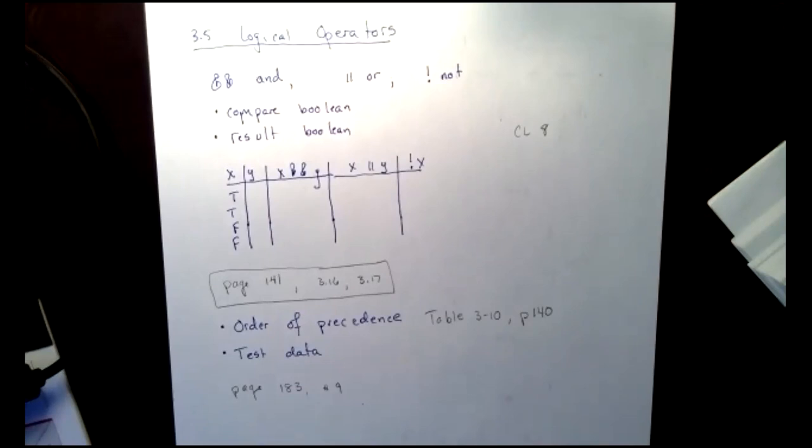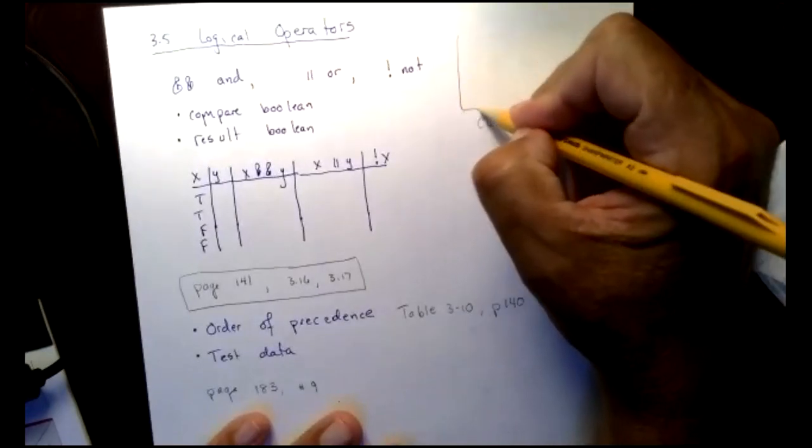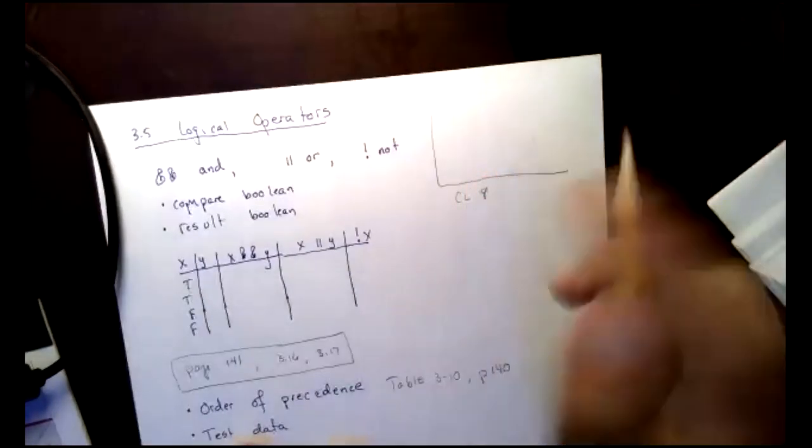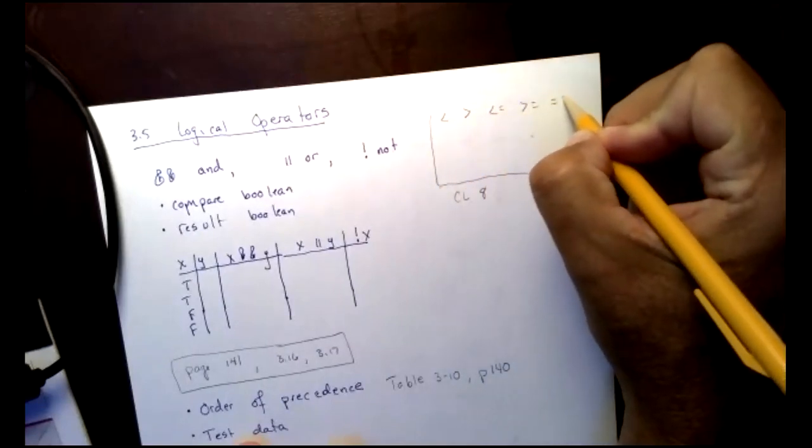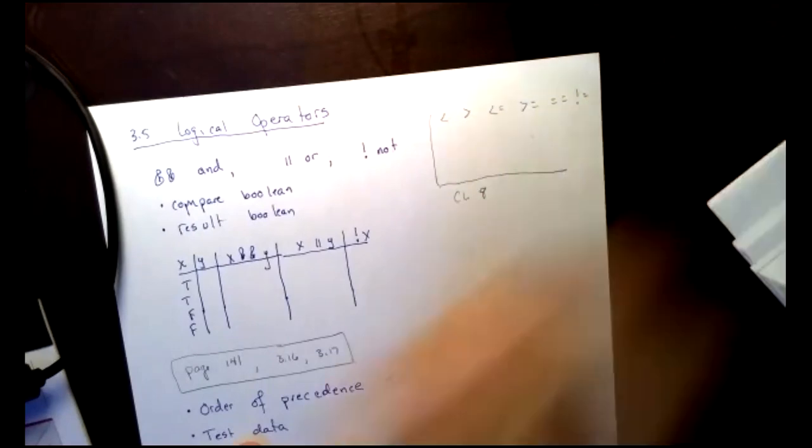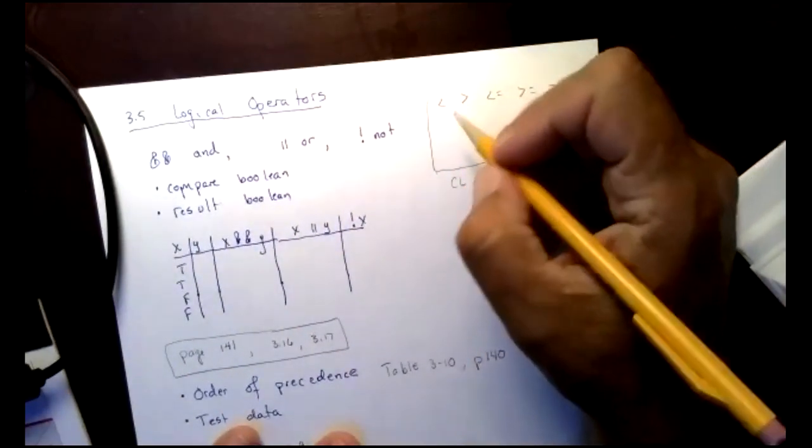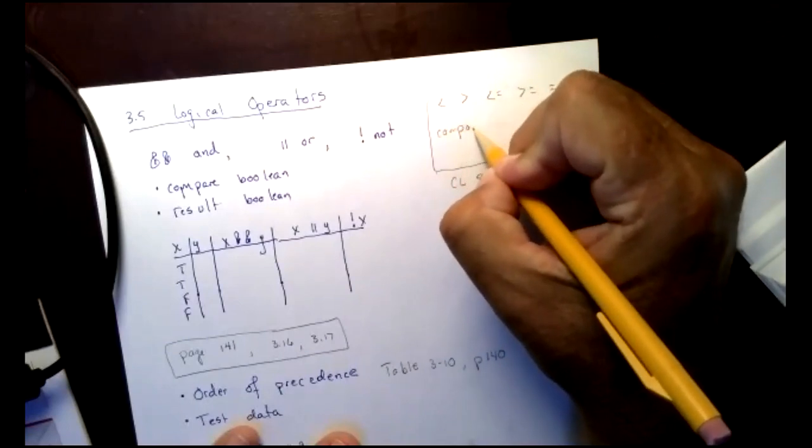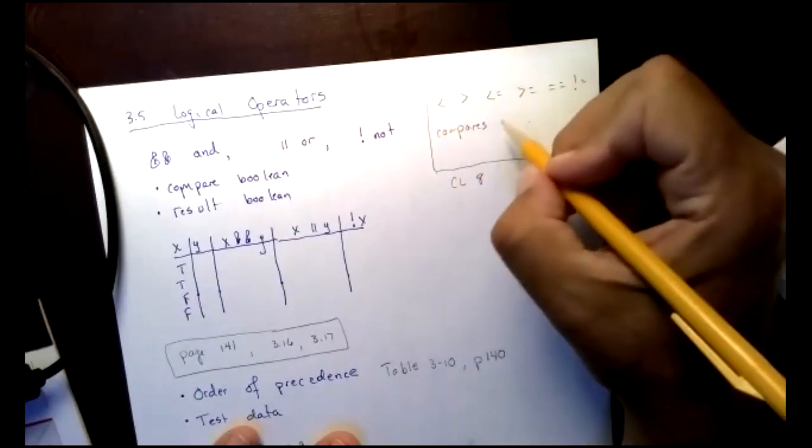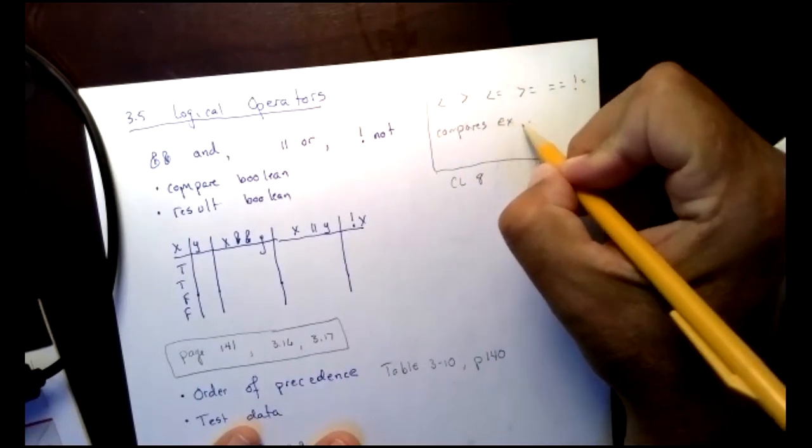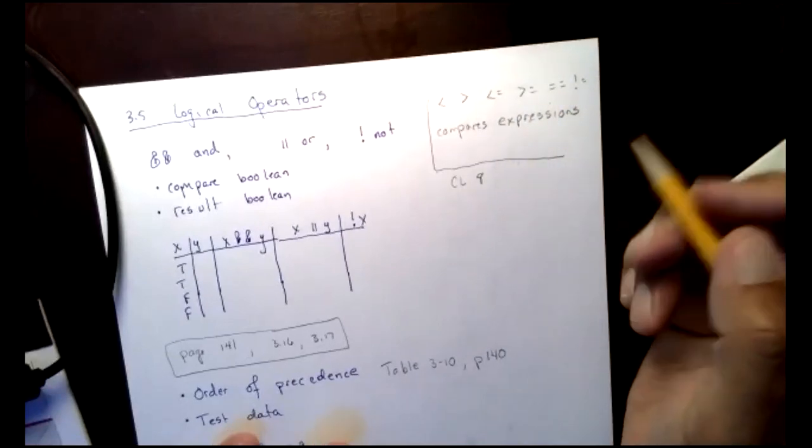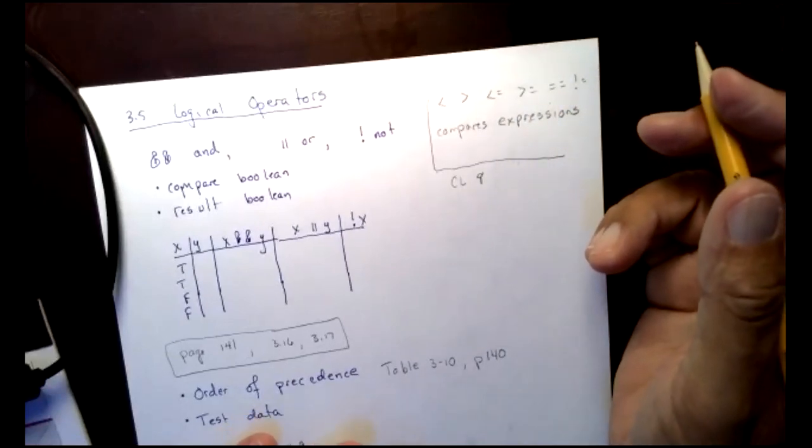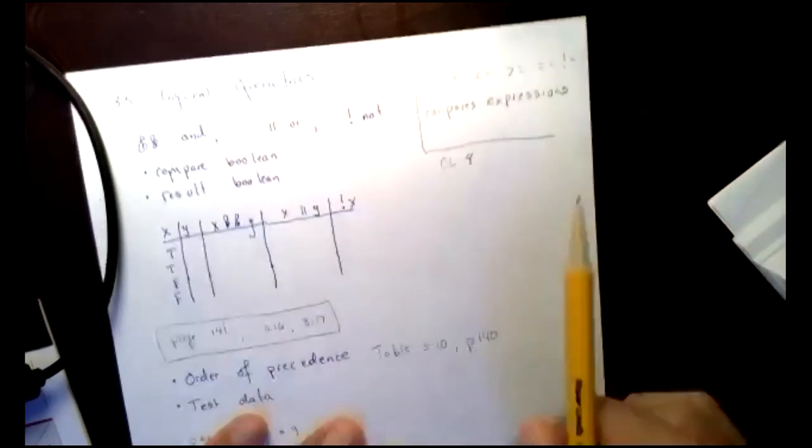Now, if you remember the other day, we talked about our relational operators and our relational operators were less than, greater than, less than or equal to, greater than or equal to, equals to, and not equals to. And we had the ever popular statement compares what? Bueller? Bueller? Bueller? I even wrote it. Somebody say it.